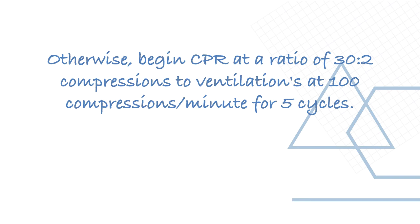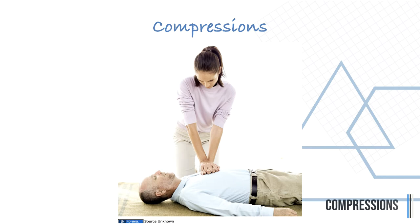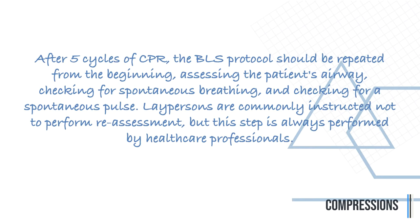If there is no pulse, begin cardiopulmonary resuscitation at a ratio of 30 compressions to 2 ventilations, at 100 compressions per minute, for five cycles. After five cycles of CPR, the basic life support protocol should be repeated from the beginning, assessing the patient's airway and checking for spontaneous breathing.